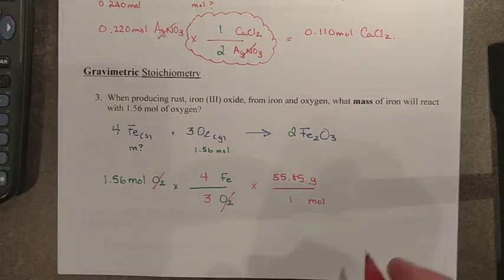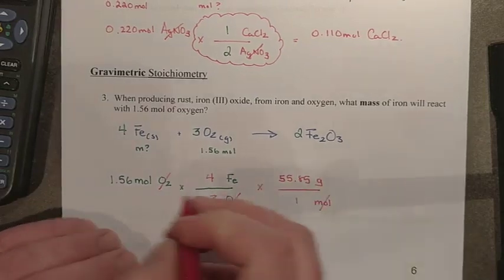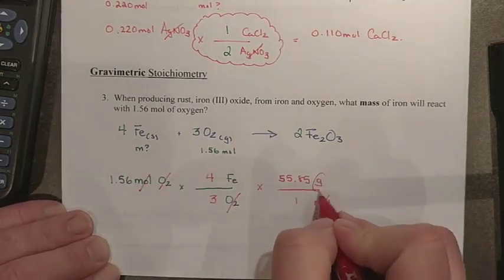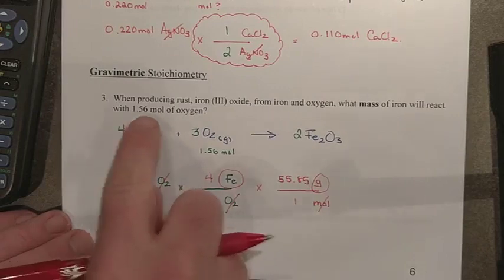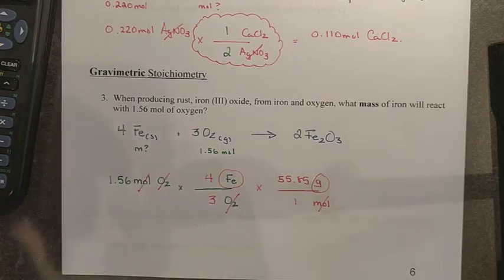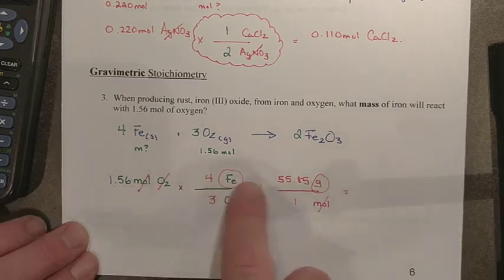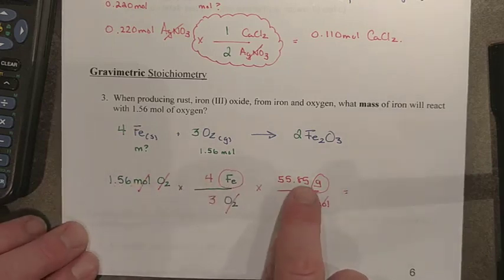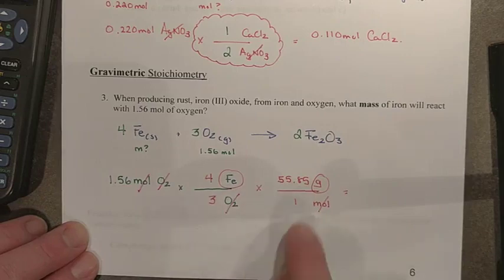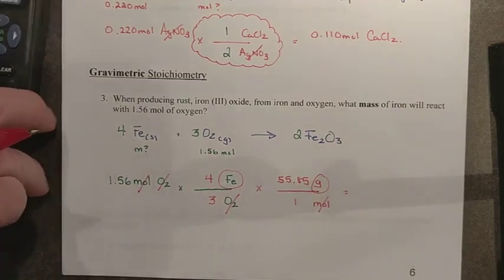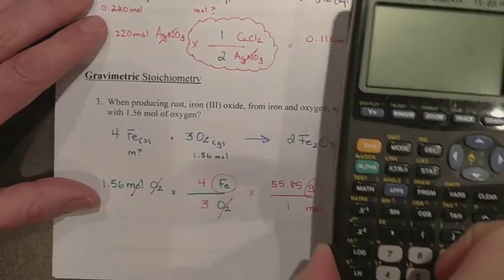So now we have, when we look at the unit cancellations, moles are now gone. And you have grams of iron, which is what you were looking for. That is the measured mass for iron. This just needs to go through our calculator. Remember that numerators in the factor label method multiply, denominators divide. So one of the ways that we might enter this one into our calculator here, if we were to try it,